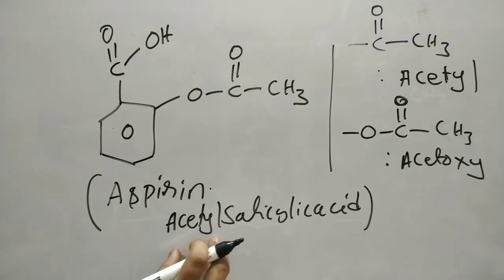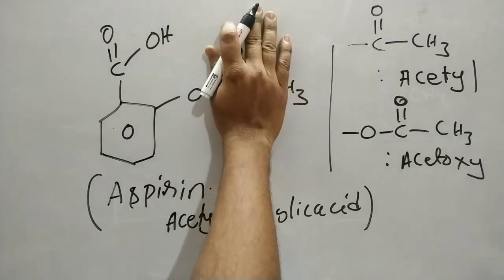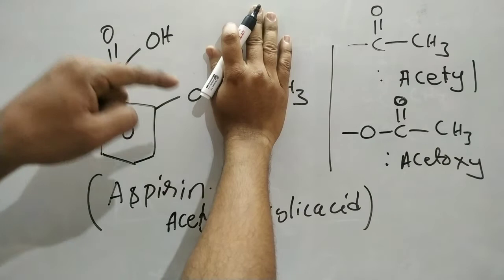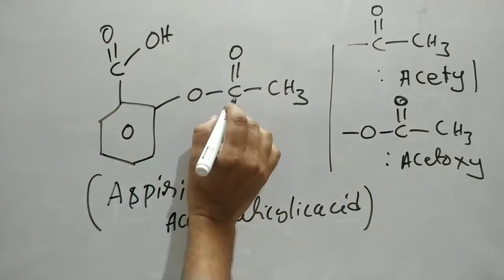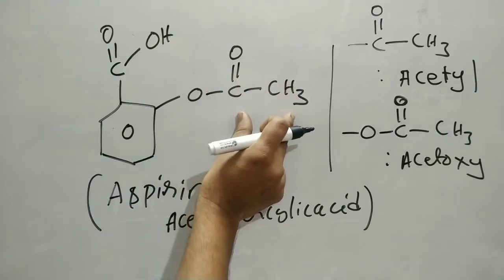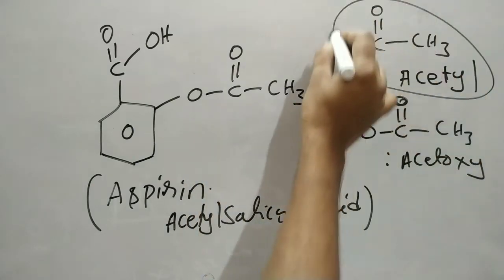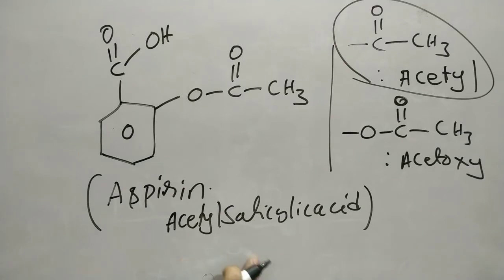Now, why is it called acetylsalicylic acid? Generally, if there is an OH group, that is salicylic acid. In salicylic acid, the hydrogen is replaced by a COCH3 group. That COCH3 group is what makes it acetylsalicylic acid.